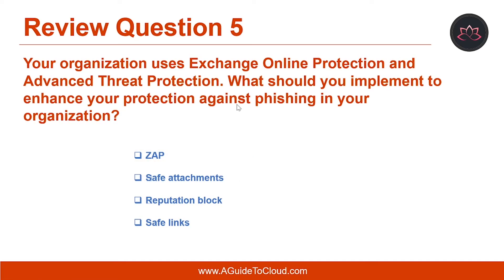Let's look at question number five. Your organization uses Exchange Online Protection and Advanced Threat Protection. What should you implement to enhance your protection against phishing in your organization? The correct answer is safe links.